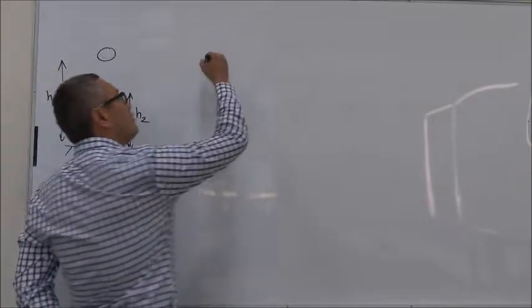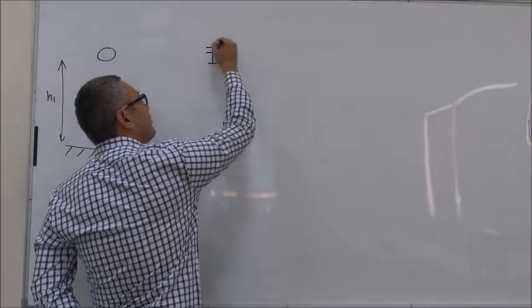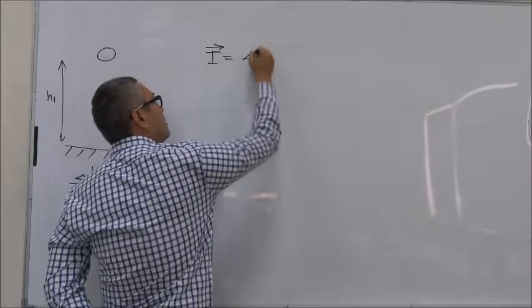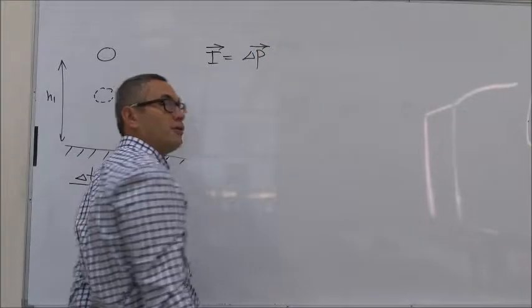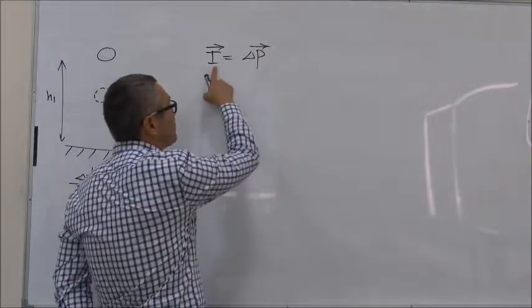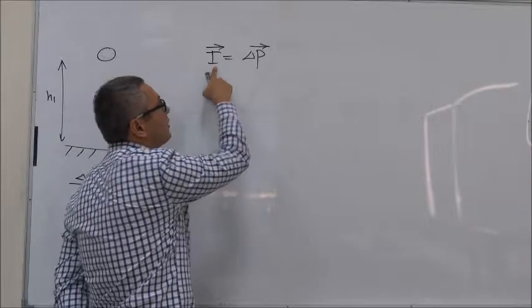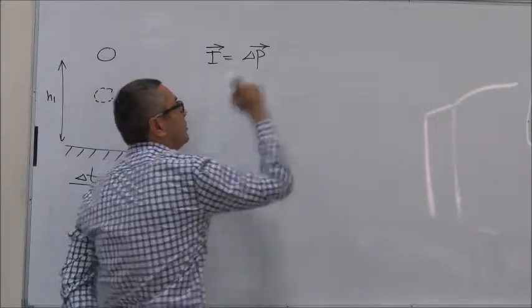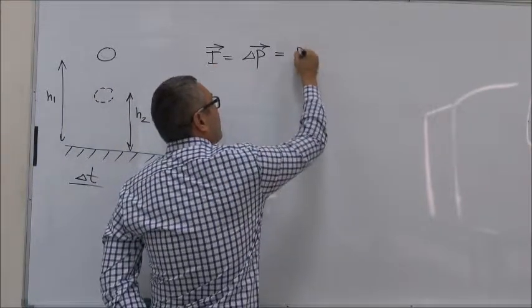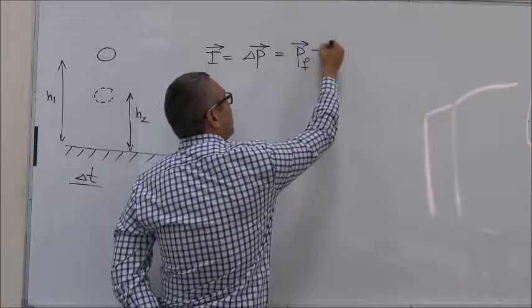Well, we know that impulse is equal to the change in momentum of the ball. The impulse that the floor transfers to the ball is equal to the change in momentum of the ball, or we can say P final minus P initial.